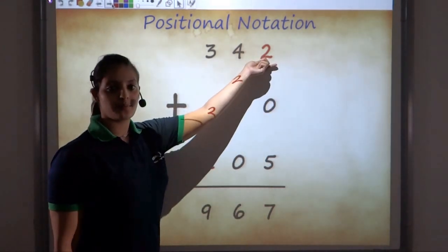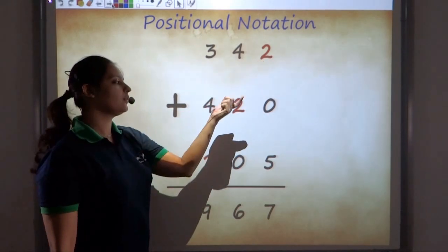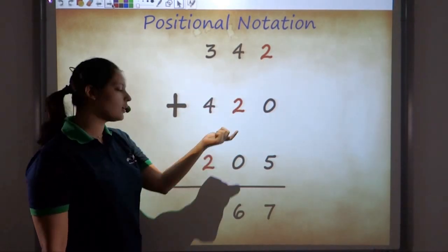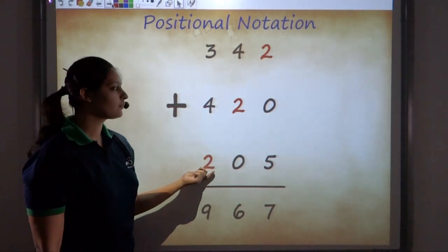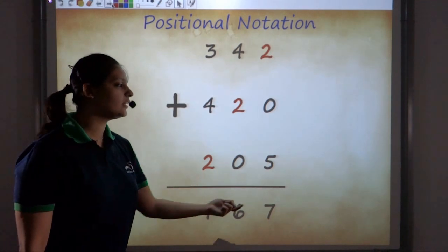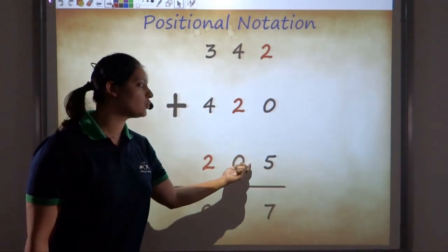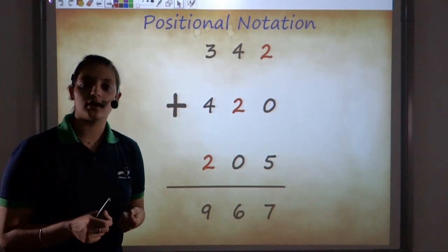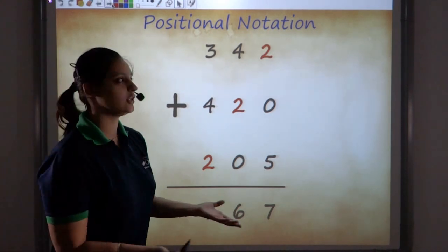So, this number two is representing two ones also, number two is representing twenty also, and two hundred also. And this is why the need of zero was felt, and zero was used to represent a column that did not contain any digits.